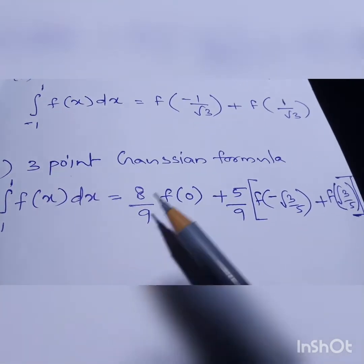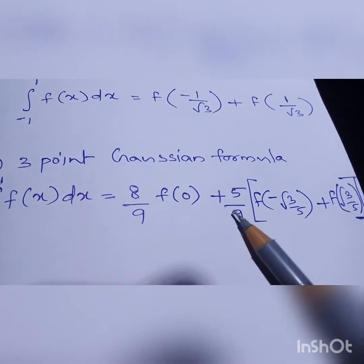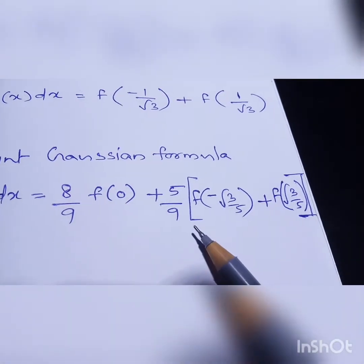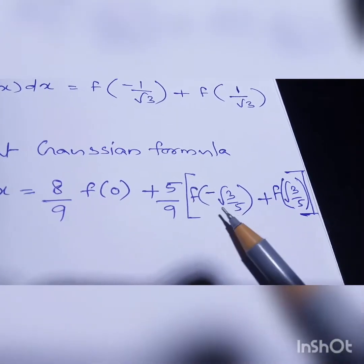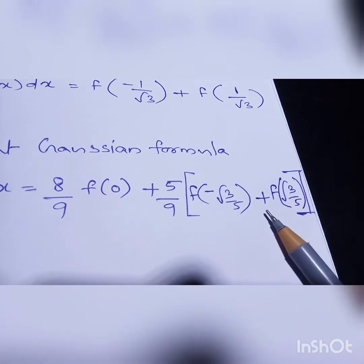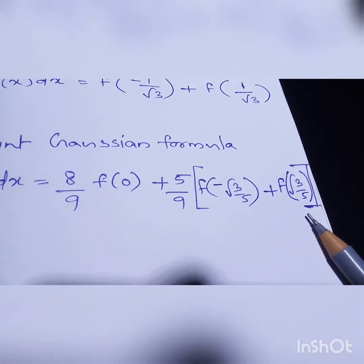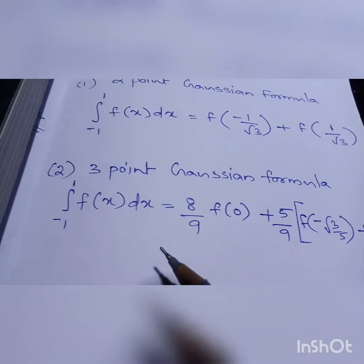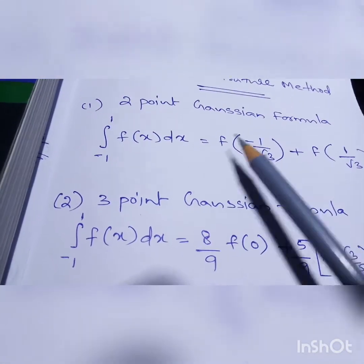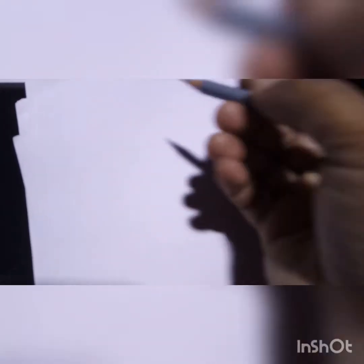The second one is the three-point Gaussian formula: integration of minus 1 to 1 of f(x) dx is equal to (8/9)·f(0) plus (5/9)·[f(-√(3/5)) plus f(√(3/5))]. So these are the formulas for the two-point Gaussian and three-point Gaussian methods.